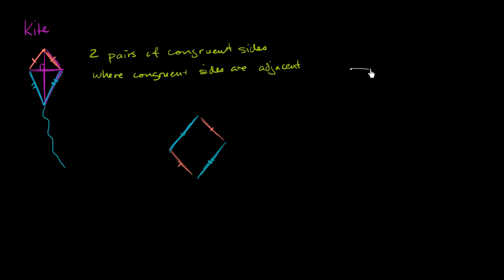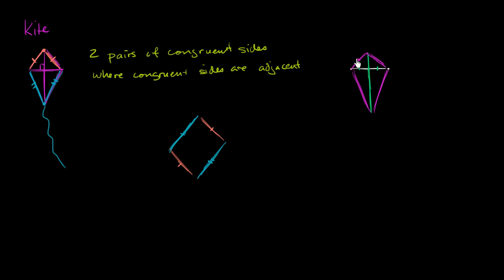So you could actually construct a kite that way. You could start with a line, and then construct a perpendicular bisector of that line — another segment that bisects it at a 90-degree angle. That bisects it, meaning this segment is equal to this segment. Then if you connect the endpoints of the two segments, you get a kite. This segment is congruent to this adjacent segment, and this segment is congruent to this adjacent segment.